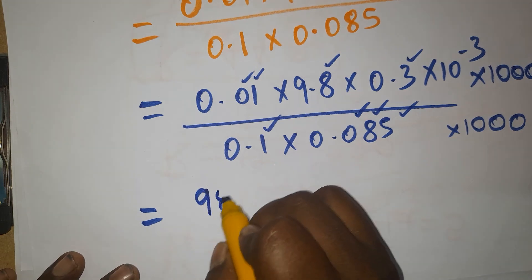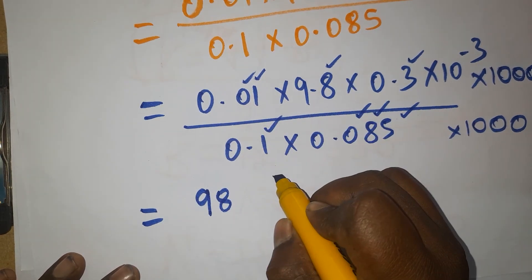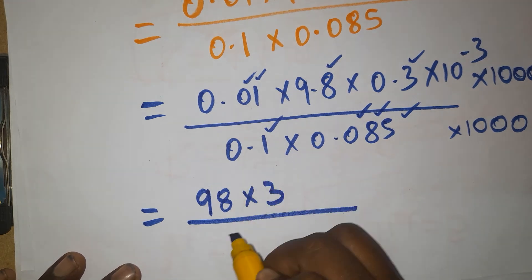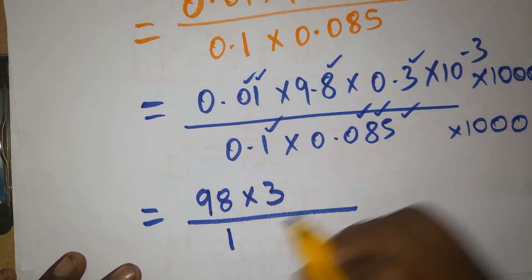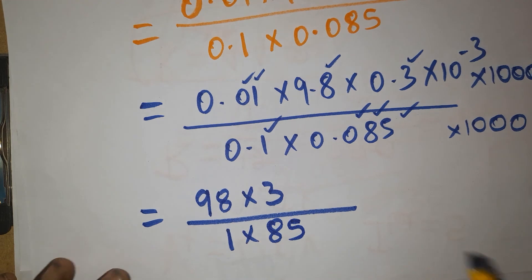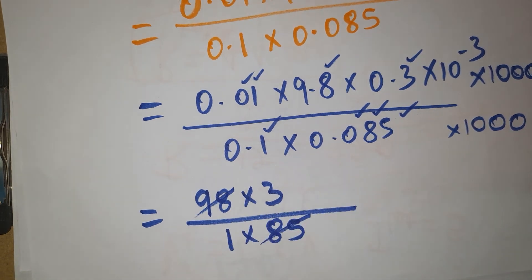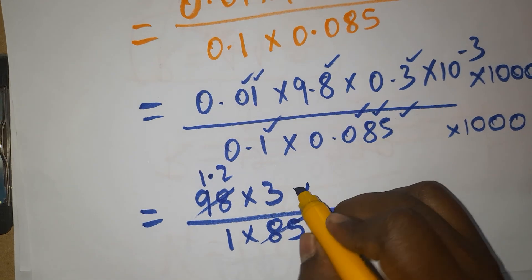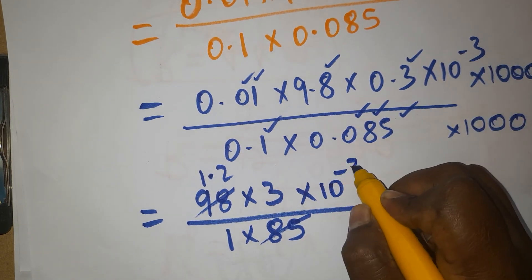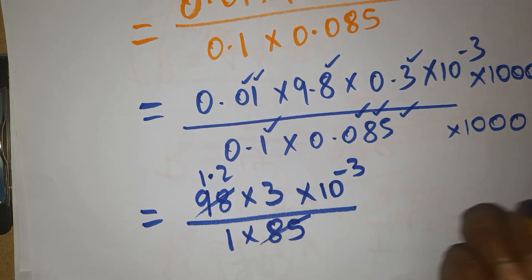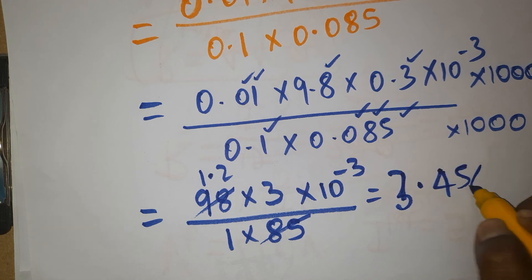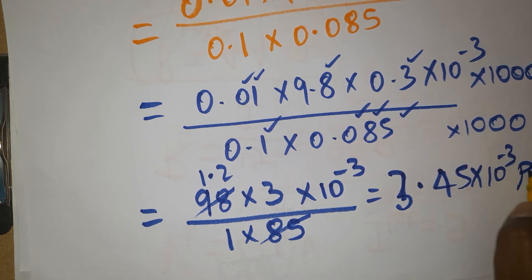We will get 98. This 1 is no need to write. 98 times 3 divided by, this is 1, just 1 times 85. This is approximately 1 point something. So 1.2 something we'll get times 10⁻³ in the numerator. This multiplication, so approximately will become 3.45 times 10⁻³ Pascals.